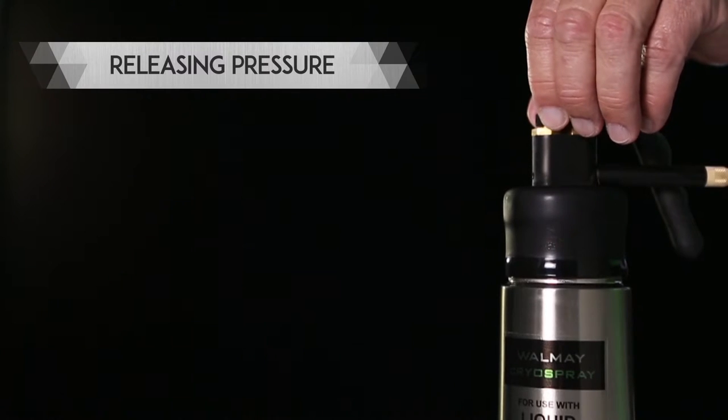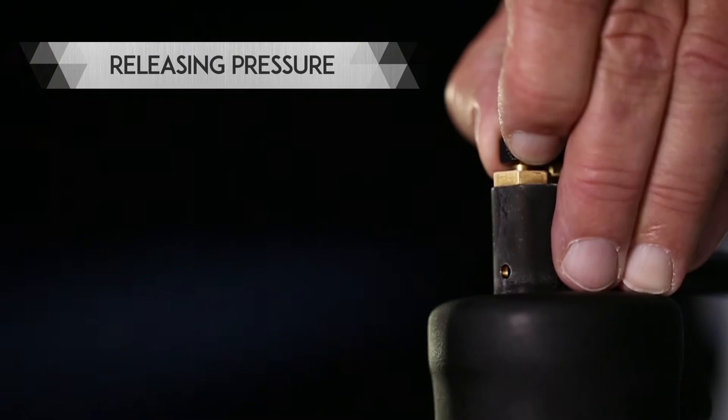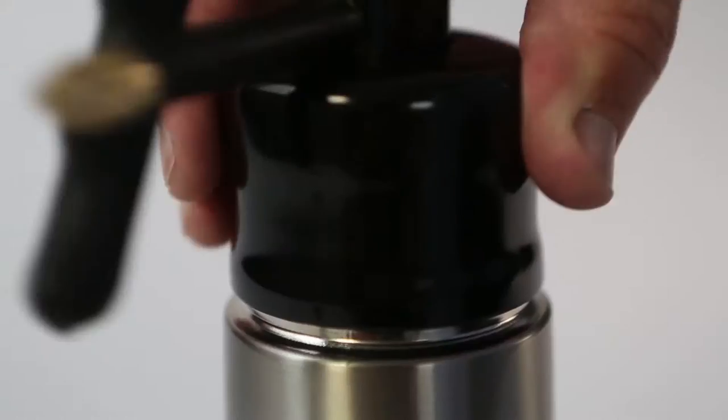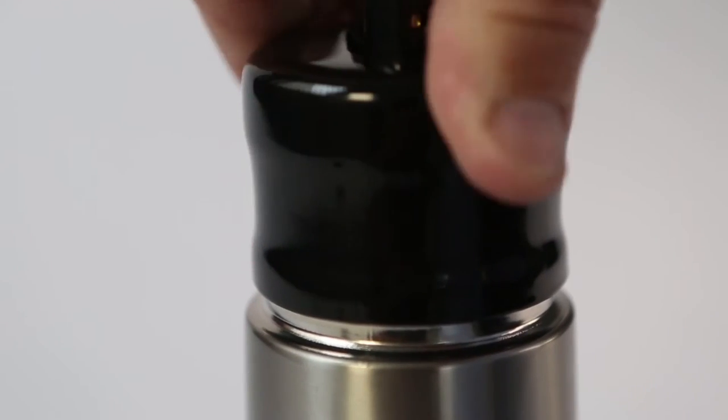Raise the knurled brass safety valve to release internal pressure, taking care to keep your hand away from the safety vent. The turret may then be unscrewed and the flask refilled.